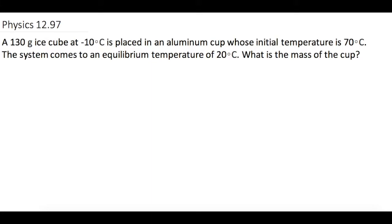A 130 gram ice cube at -10°C is placed in an aluminum cup whose initial temperature is 70°C. The system comes to an equilibrium temperature of 20°C. What is the mass of the cup?